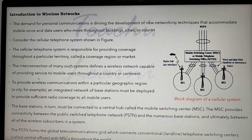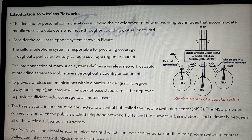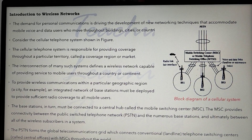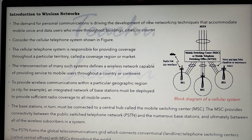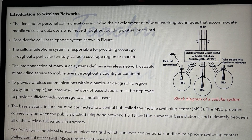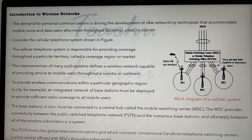To provide wireless communication within a particular geographic region or city, an integrated network of base stations must be deployed to provide sufficient radio coverage to all mobile users. For moving users, network coverage is available in one geographic region. The base stations must be connected to a central hub called the Mobile Switching Center (MSC), which provides connectivity between the Public Switched Telephone Network (PSTN) and the numerous base stations, and ultimately between all wireless subscribers in a system.